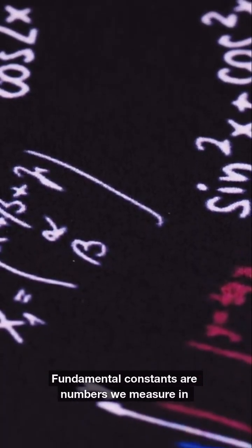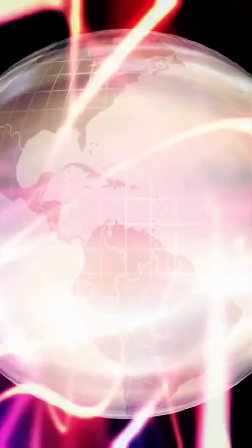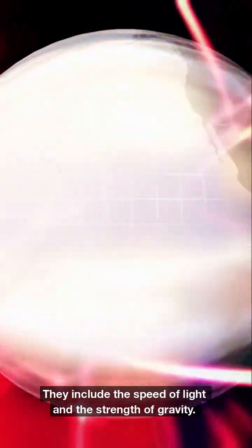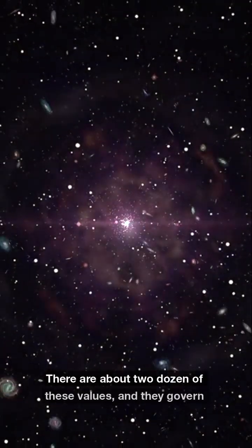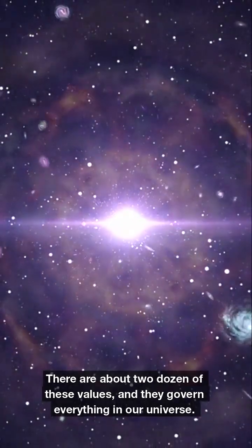Fundamental constants are numbers we measure in physics. They include the speed of light and the strength of gravity. There are about two dozen of these values, and they govern everything in our universe.